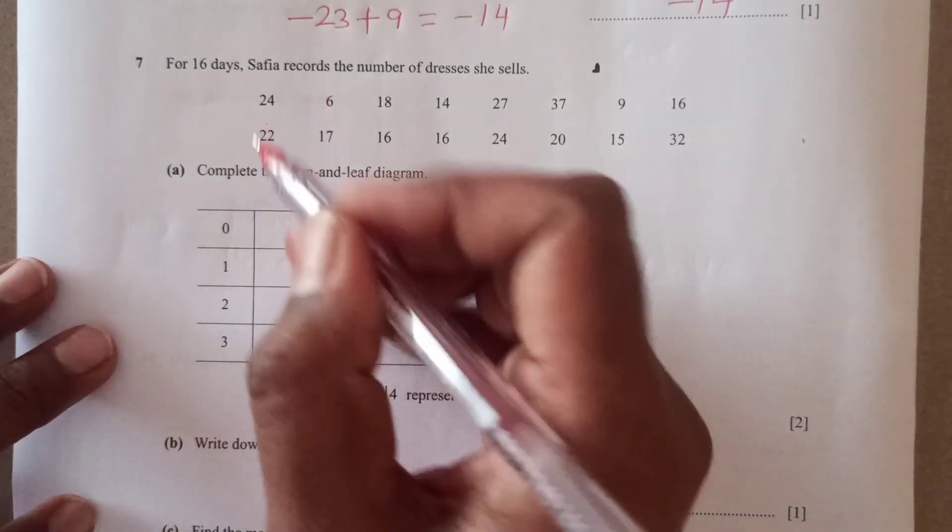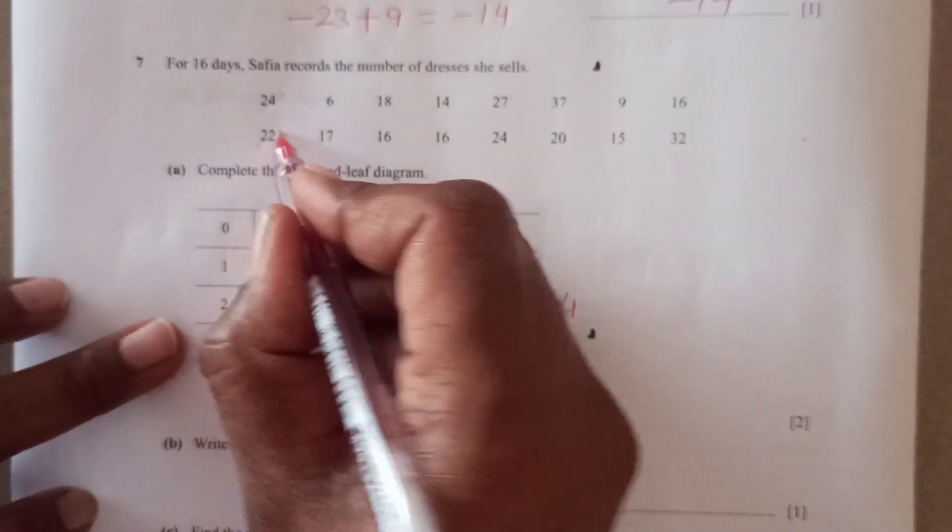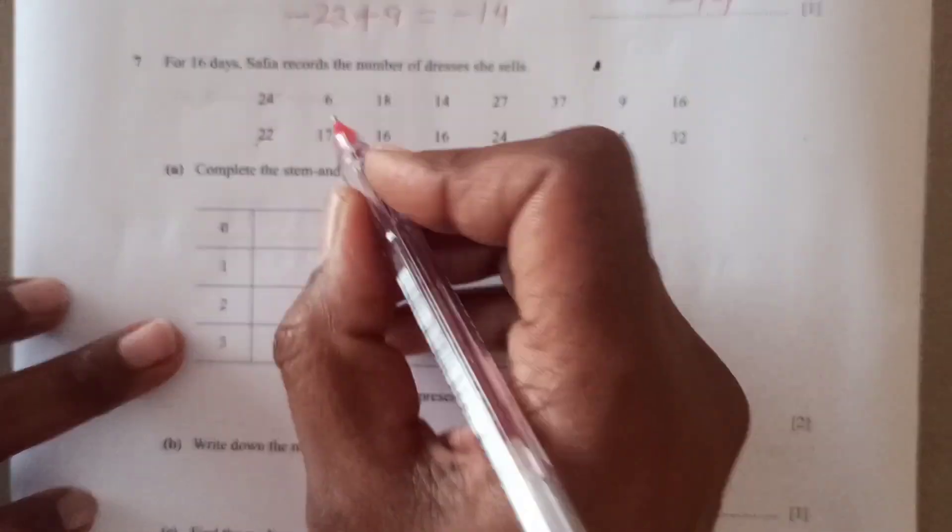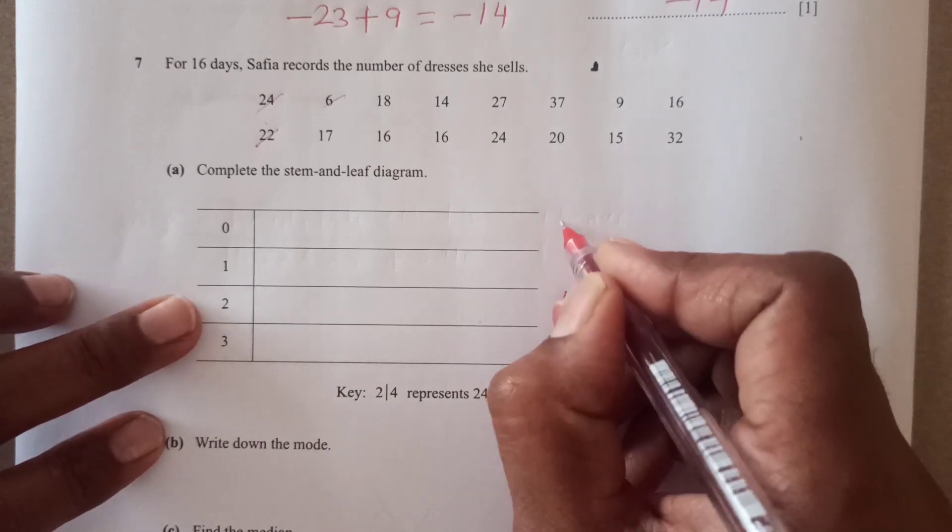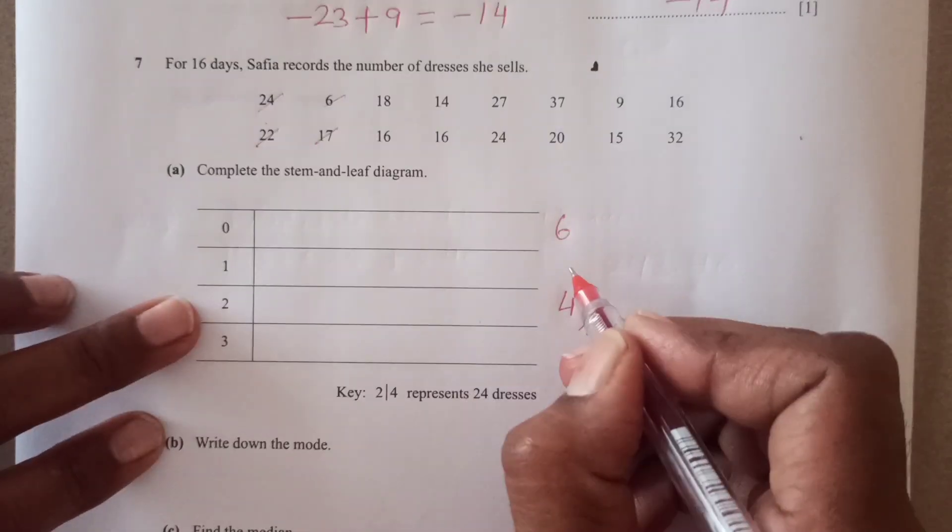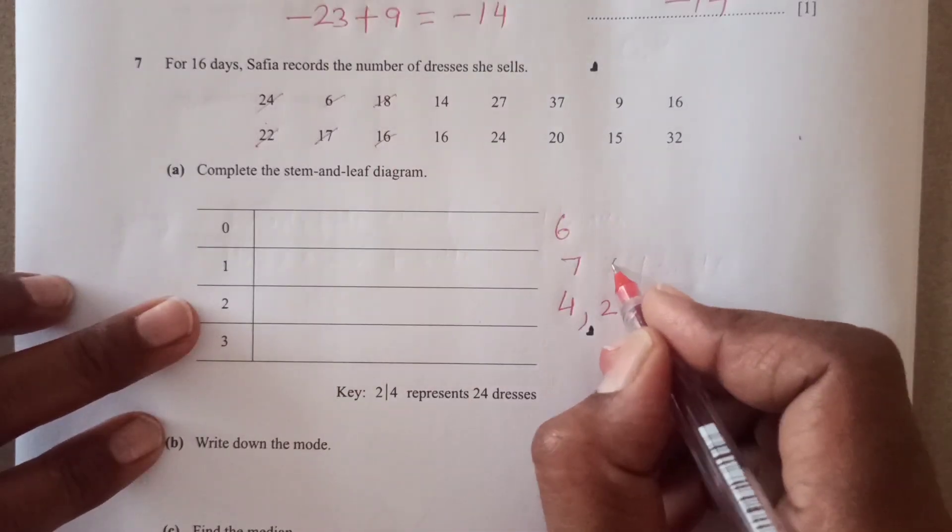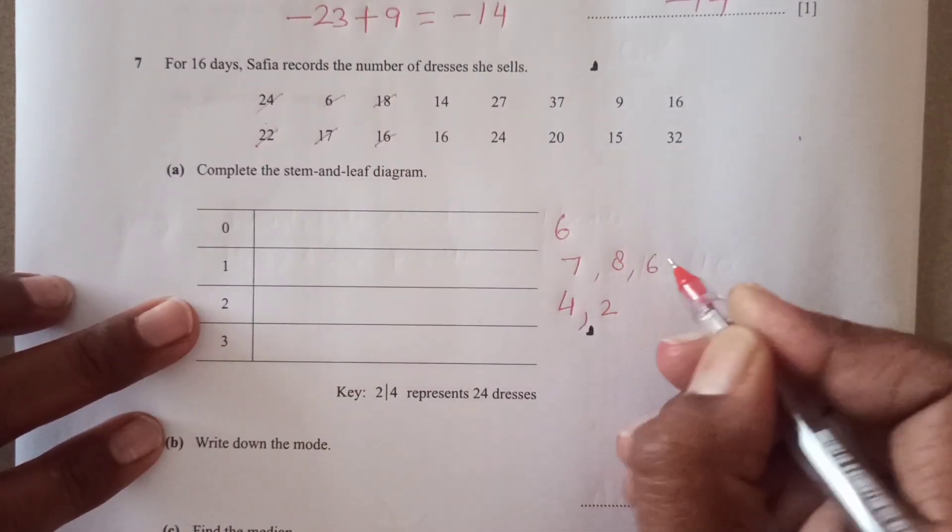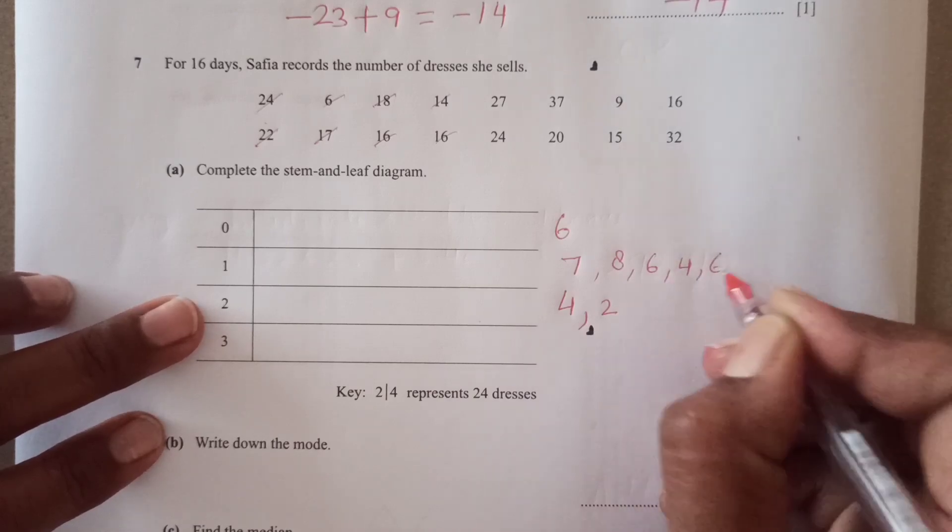So let's start with this 24, 24. I'm just writing the second digit. Here is 22. Then 6, 6 goes here. 17, 1, 7. That is 7. 18, 16 also. 8, 6. Then 14, 16 also goes here. 4, 6 here.